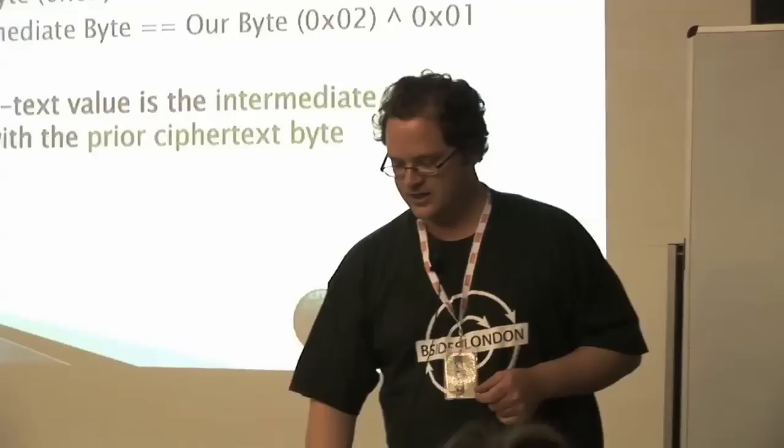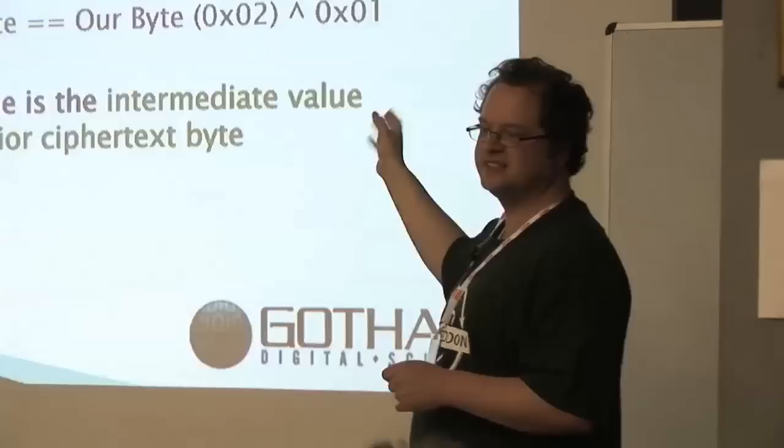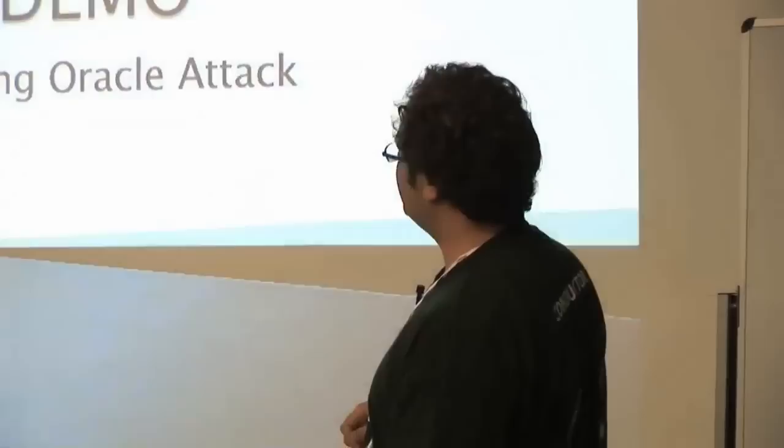Knowing the intermediate value gives us the ability to figure out the unencrypted value. It also gives us the ability — which we won't go into in detail — to re-encrypt data using that block. So not only can we decrypt ciphertext with this exploit, we can also re-encrypt data, all without knowing the key or the algorithm. We're entirely looking at the behavior of the system as it's implemented.